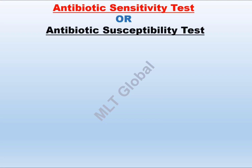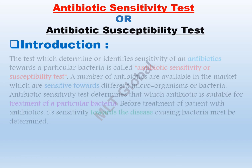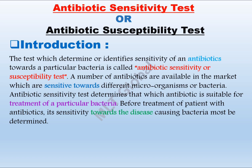Antibiotic Sensitivity Test, or Antibiotic Susceptibility Test. The test which determines or identifies the sensitivity of an antibiotic towards a particular bacteria is called the Antibiotic Sensitivity or Susceptibility Test. A number of antibiotics are available in the market which are sensitive towards different microorganisms or bacteria. This test determines which antibiotic is suitable for treatment of a particular bacterial infection.